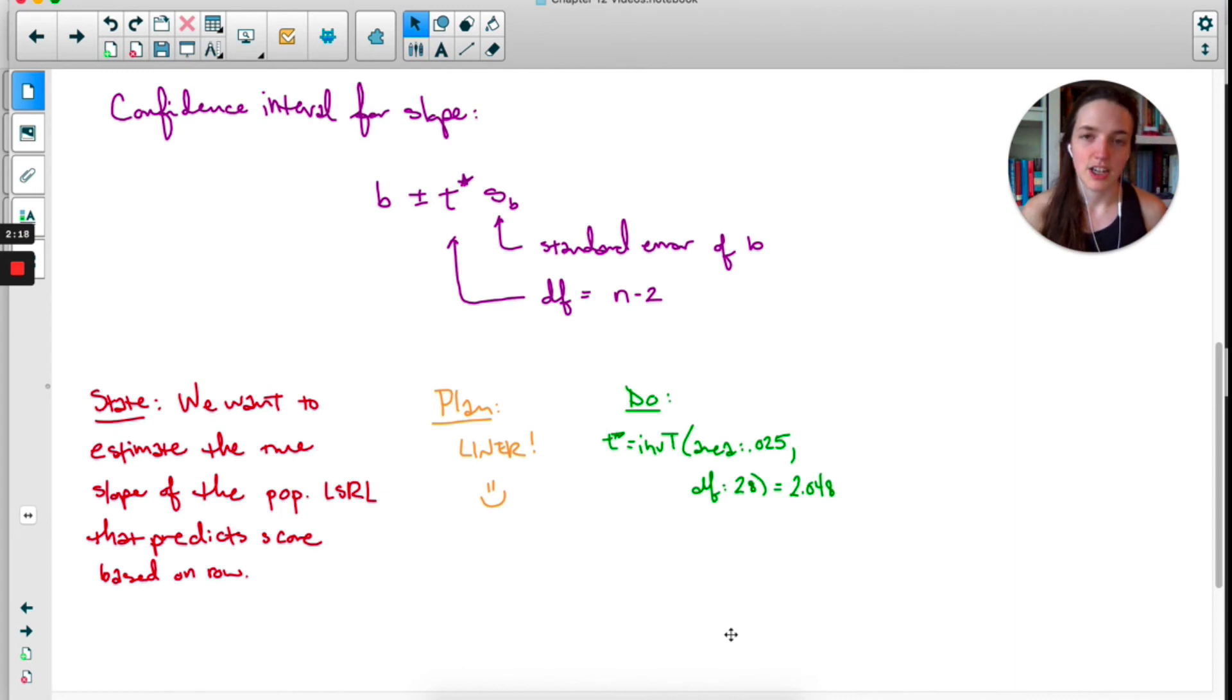For the do step, we start by finding the critical value, in this case t*. 95% of the data in the middle of the distribution leaves 0.025 in each tail, so I use that as the area. Degrees of freedom is n-2. I think I forgot to put it on this page, but there were 30 students. Everything after that is straightforward. I got the slope and standard error from the Minitab output, t* = 2.048 from right there. Plugging it all in.